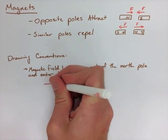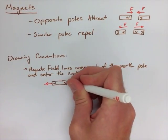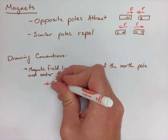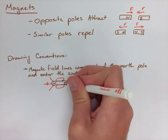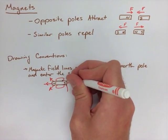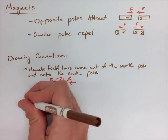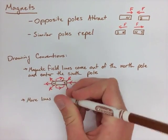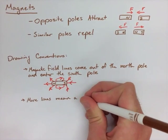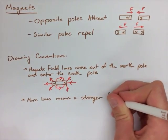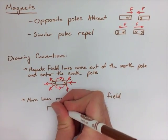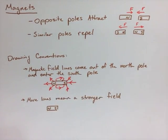More lines mean a stronger field is the next thing that we're going to look at. So when we have more field lines, we have a stronger field. This is again similar to electric fields. If we remember electric fields, we have more field lines, we have a stronger field. Again, these two things are very similar to each other.